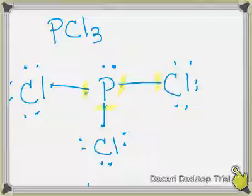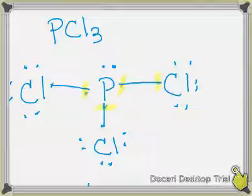A common question is: how do I know to write P before Cl? In ionic bonding we put metal first and non-metal second, but both of these are non-metals. For molecular compounds, you put them in the order they appear on the periodic table — whoever is to the left gets listed first. H is to the left of oxygen, so H is listed first in H2O. P is to the left of chlorine, so P is listed first in PCl3.